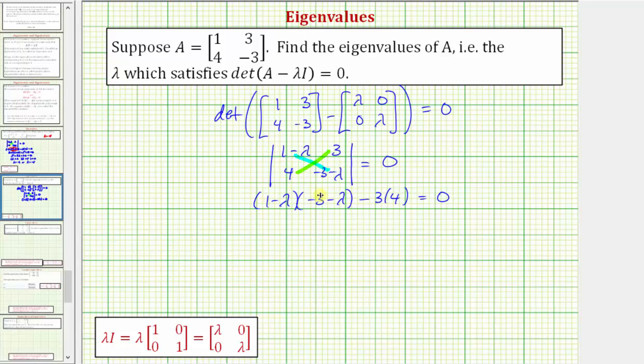Let's multiply this out. So we have negative three minus lambda, or minus lambda, plus three lambda, plus lambda squared, minus twelve equals zero.